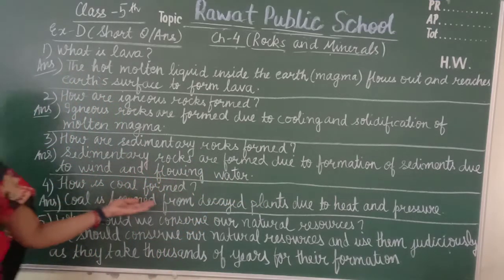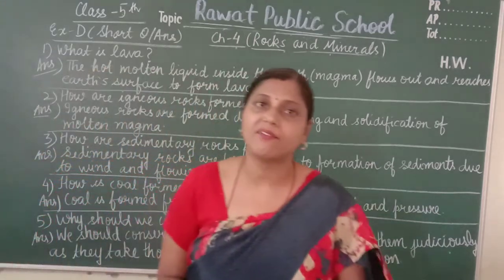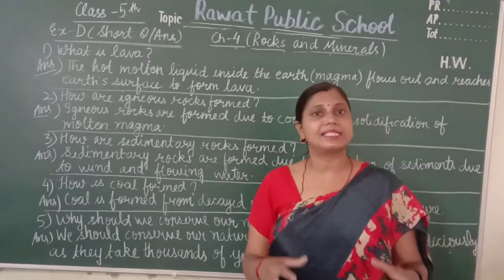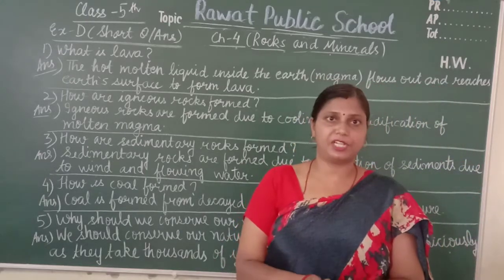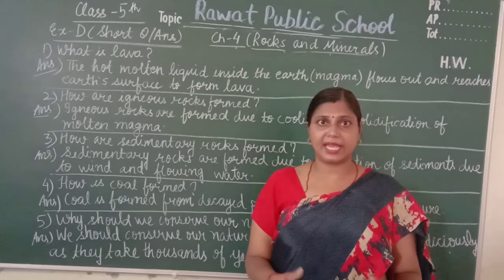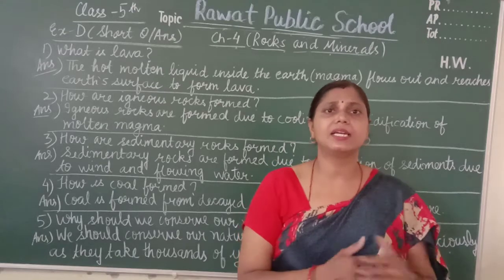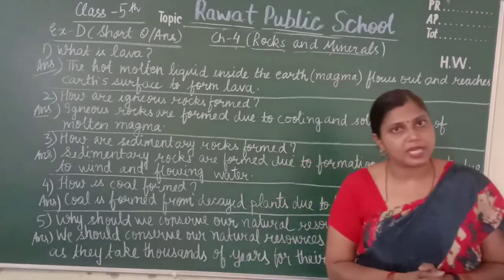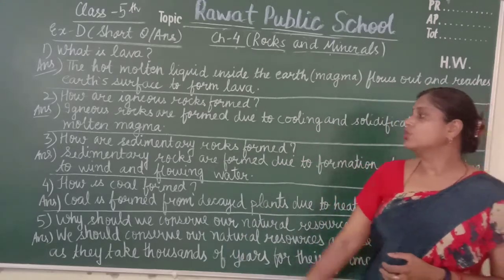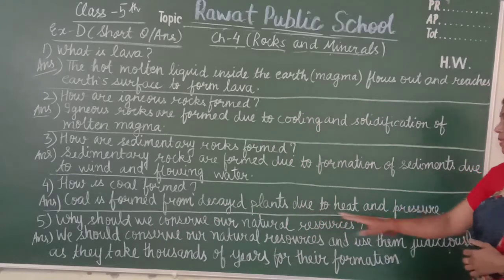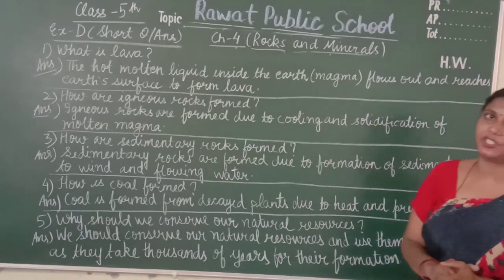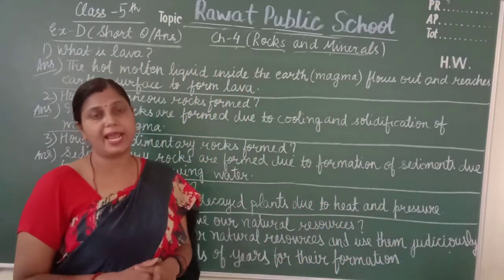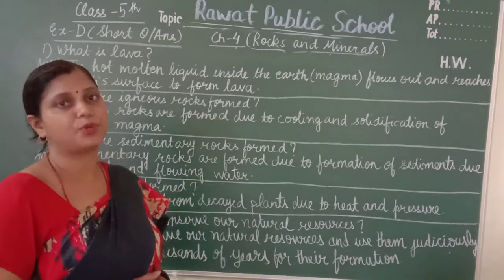Question four is: how is coal formed? Coal is formed from the remains of plants inside the earth due to heat and pressure. The decayed plants, buried deep inside the earth, are converted into coal. It is a very slow process and takes millions of years.